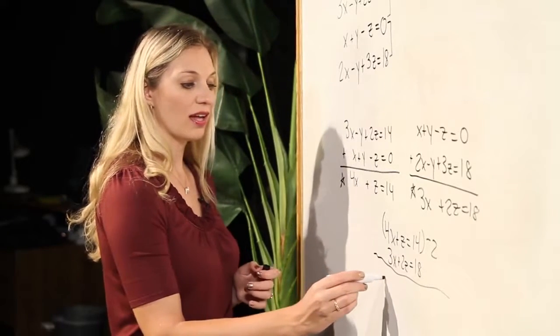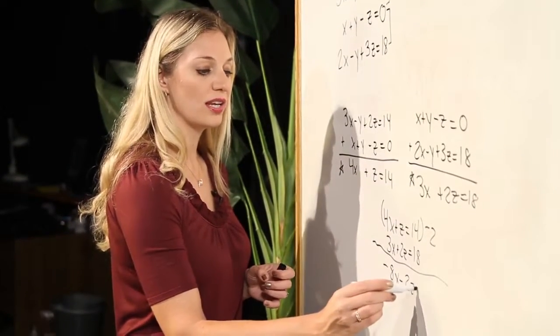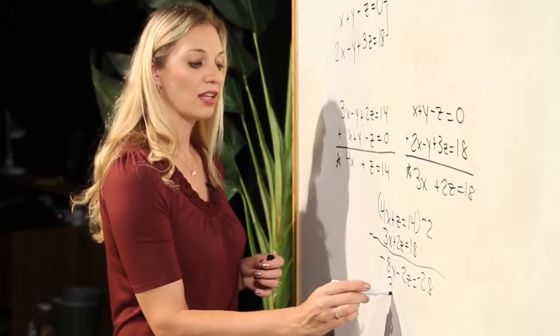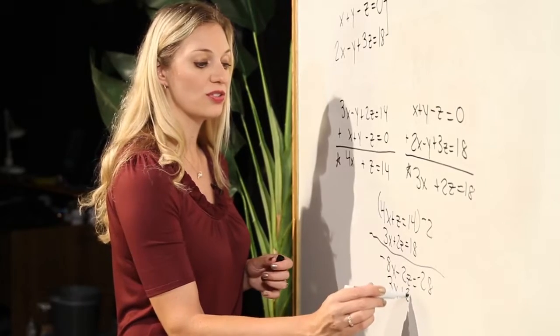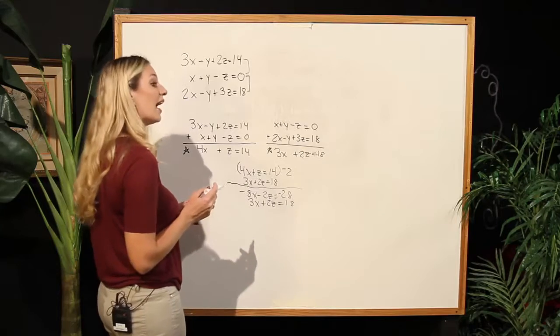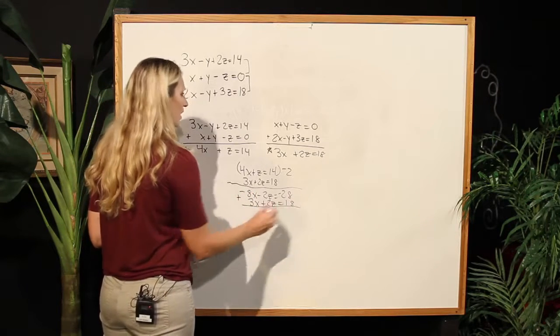Here's what I'll now have: negative 8x minus 2z equaling negative 28, and 3x plus 2z equaling 18 still. I have like coefficients with opposite signs, and I may now add these together.